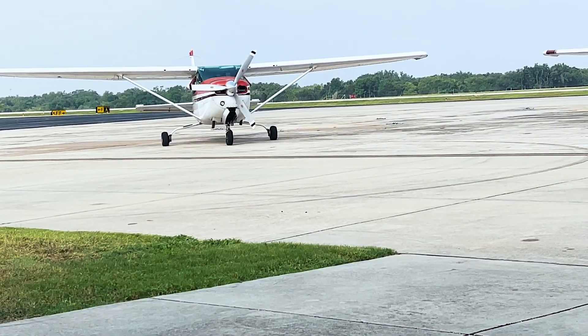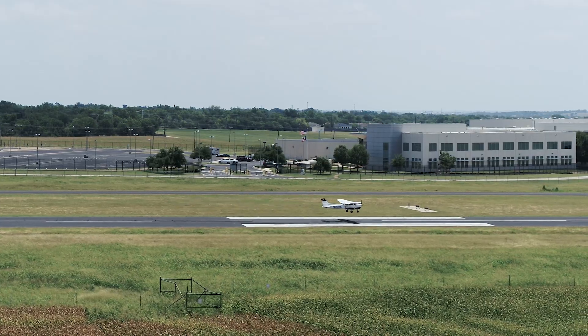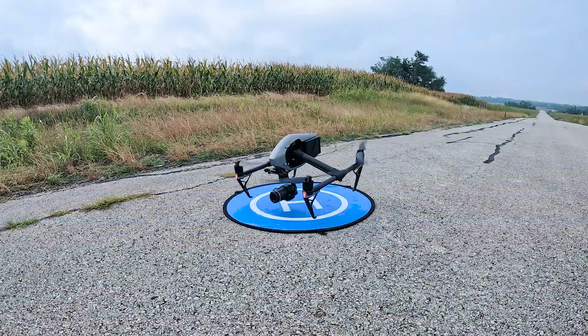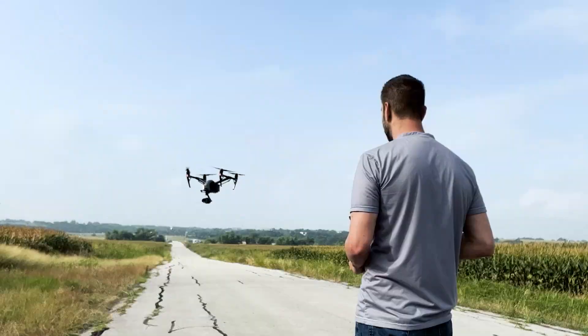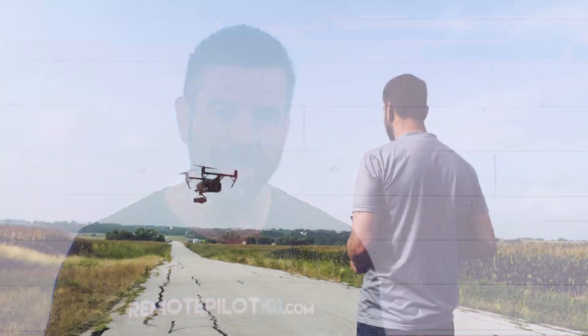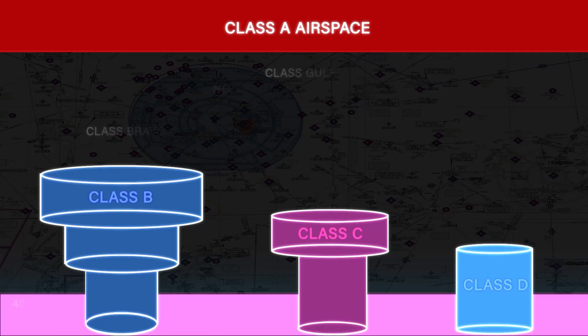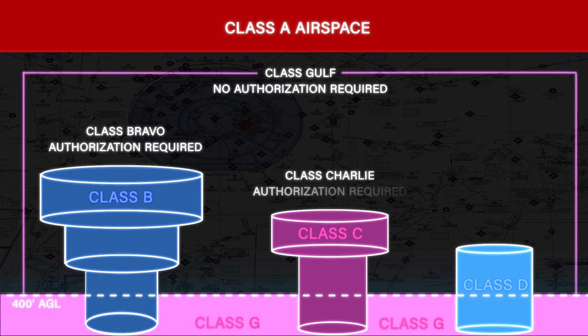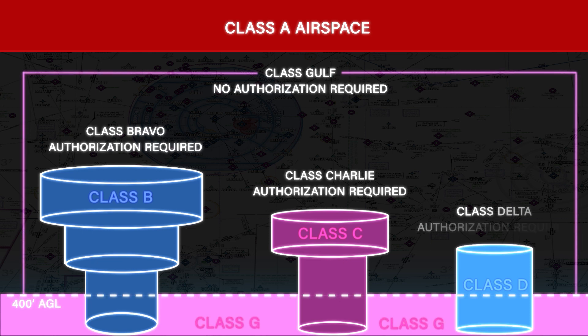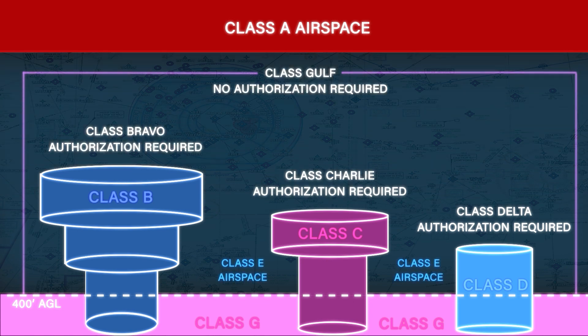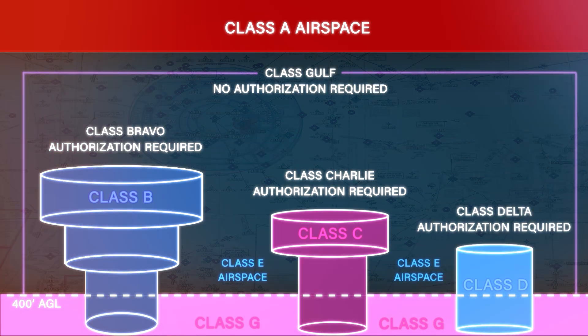Now if you plan on flying near airports that are in what is deemed uncontrolled airspace and remain under 400 feet AGL — that's above ground level — prior authorization to fly here is not required. Now this is your Class G, or Class Golf, airspace. It extends up from the surface to the overlying Class E, or Class Echo, airspace. We'll deal with that more complex controlled environment in just a second.